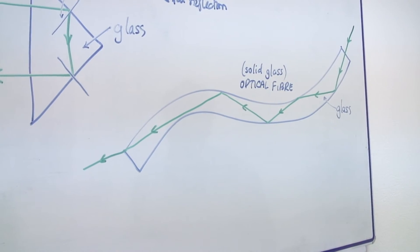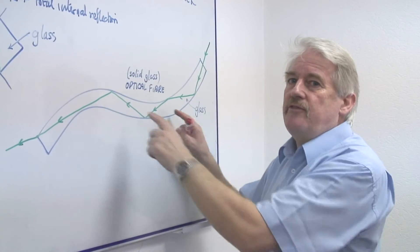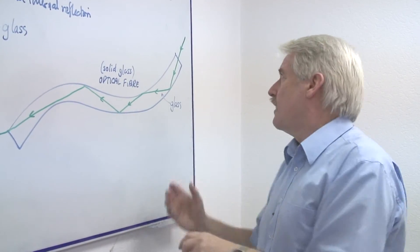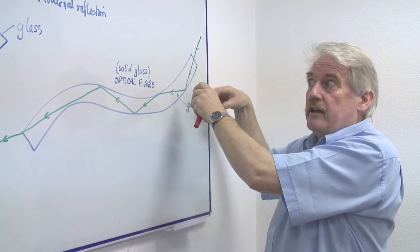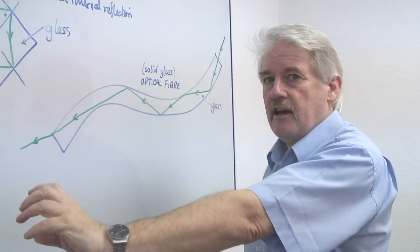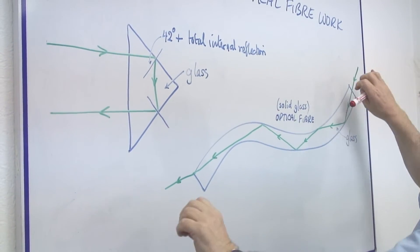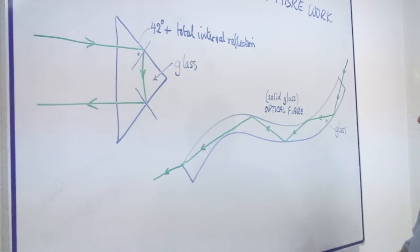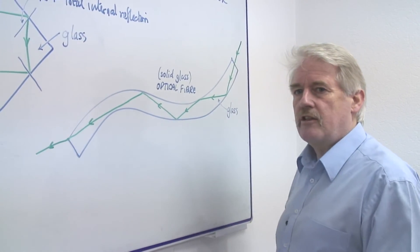Now, can you imagine, if you had a thousand or a million of these fibres in a bundle, the light going in at this end, depending on where it lands in that bundle, will come out at the other end. As long as the bundles are in the same order as it comes out, an image at this end will be exactly the same as the image at the other end.